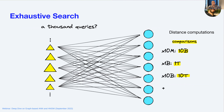If we had a thousand queries instead of one, we increase the number of comparisons and computations that we need to perform pretty significantly. So it very quickly becomes not scalable.